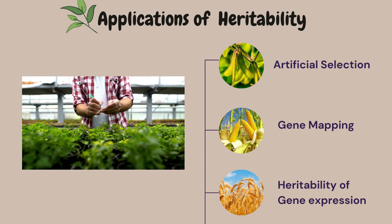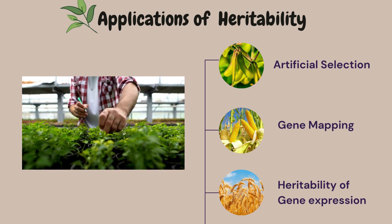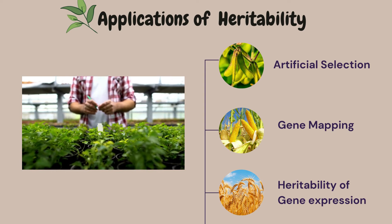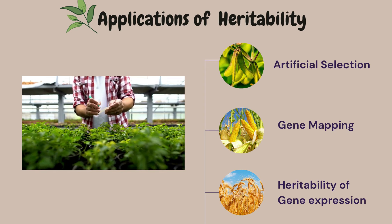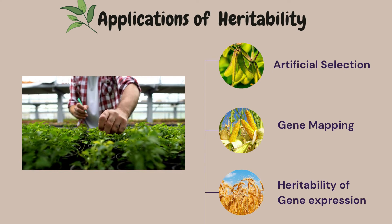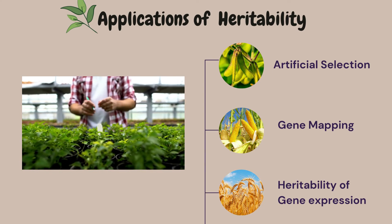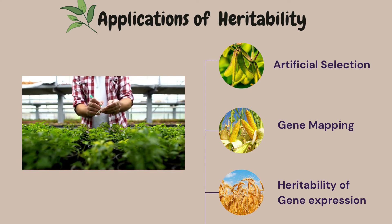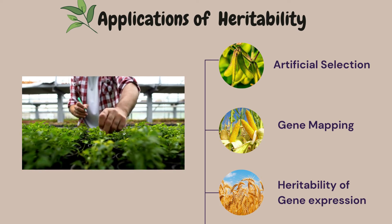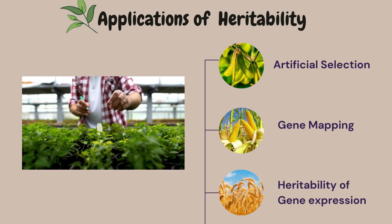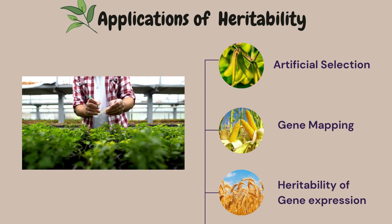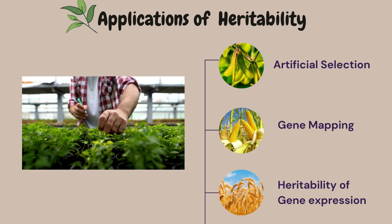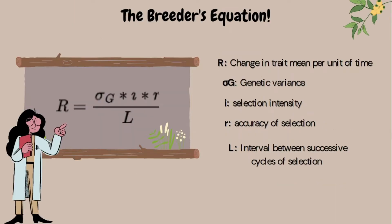There is also the possibility of calculating the heritability of gene expression, which is very interesting. Now that we know the difference between the types of heritability, we can jump to the next steps and better understand the use of these concepts not at the population level, but at the individual level within a population. With the concepts seen above, we are going to approach the Breeder's equation proposed by Lush in 1943.